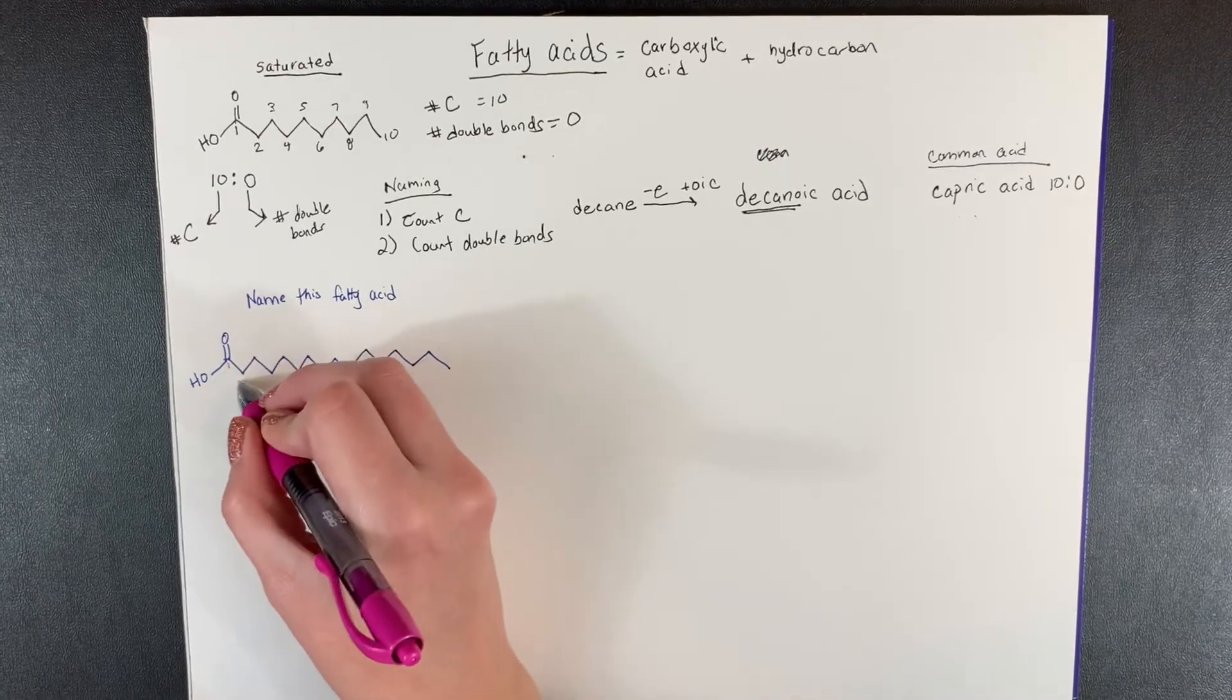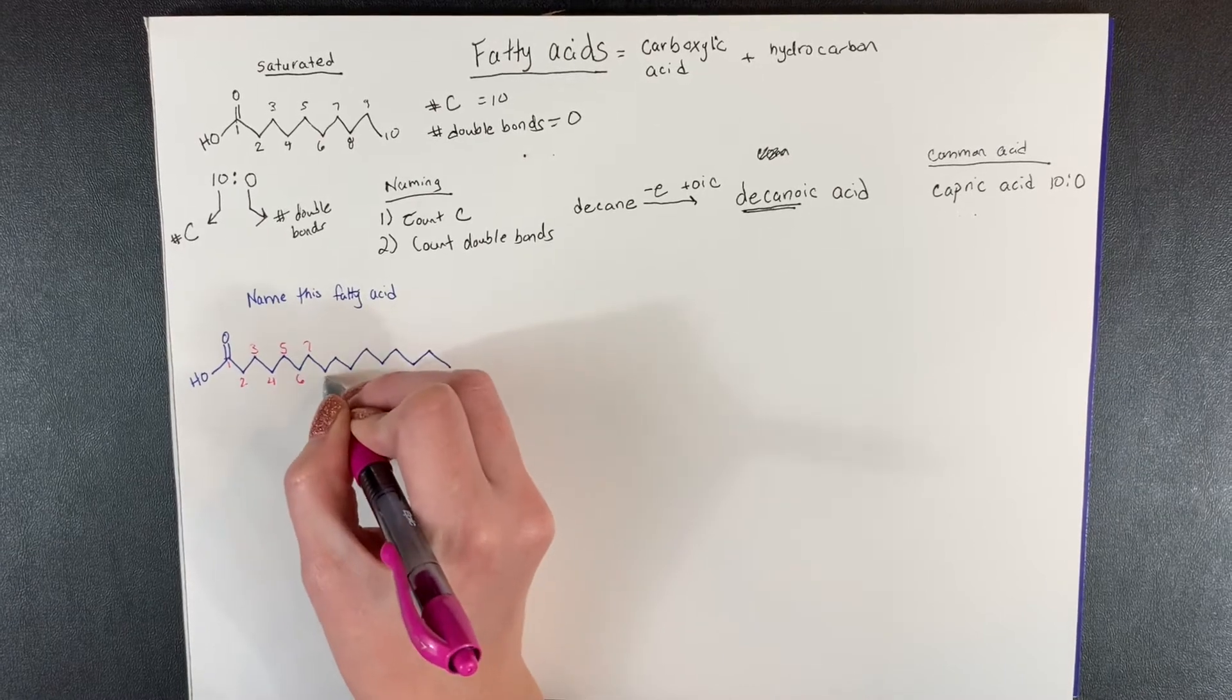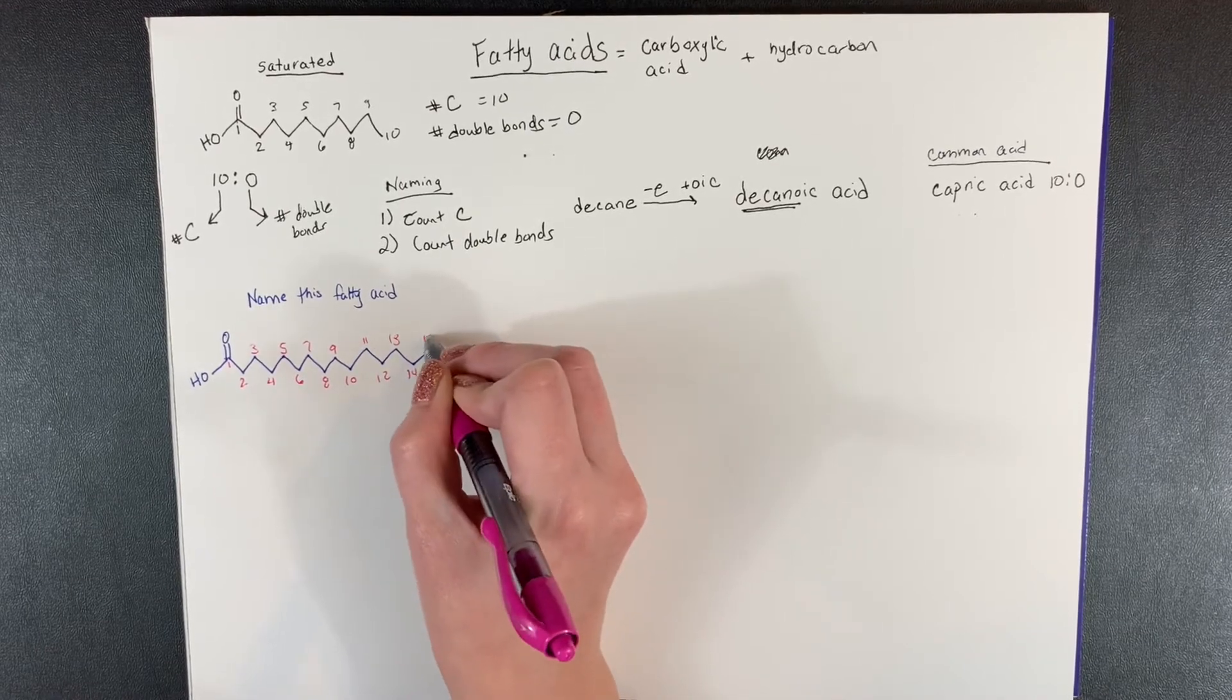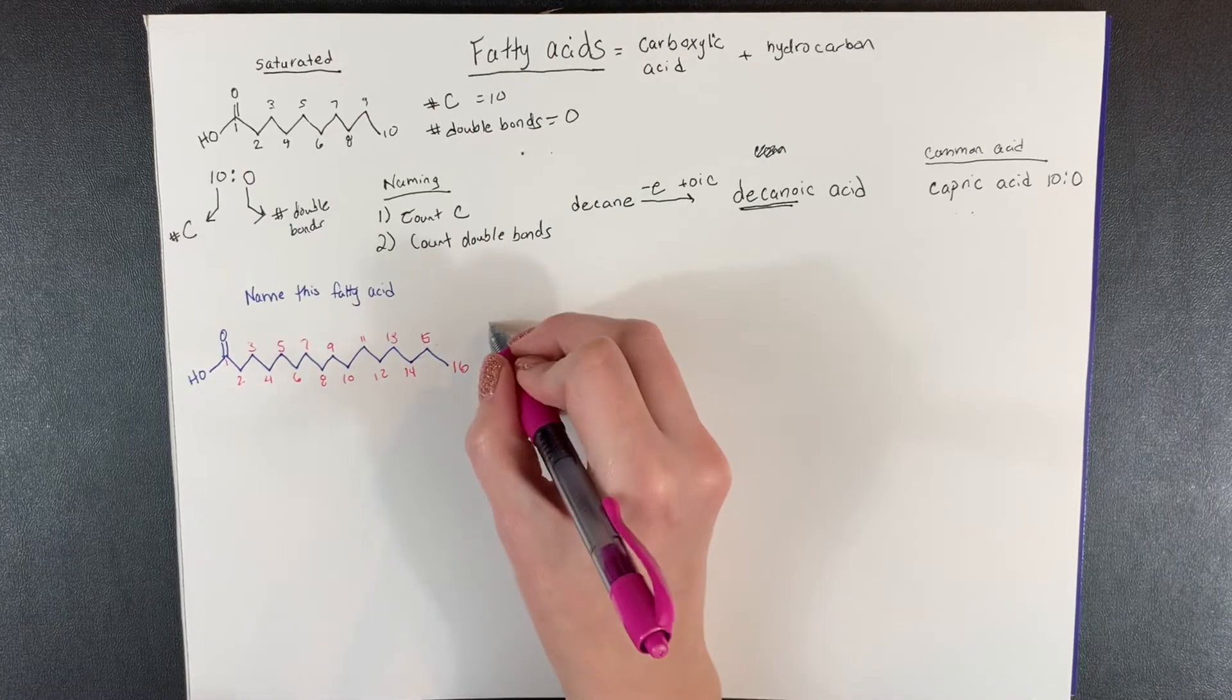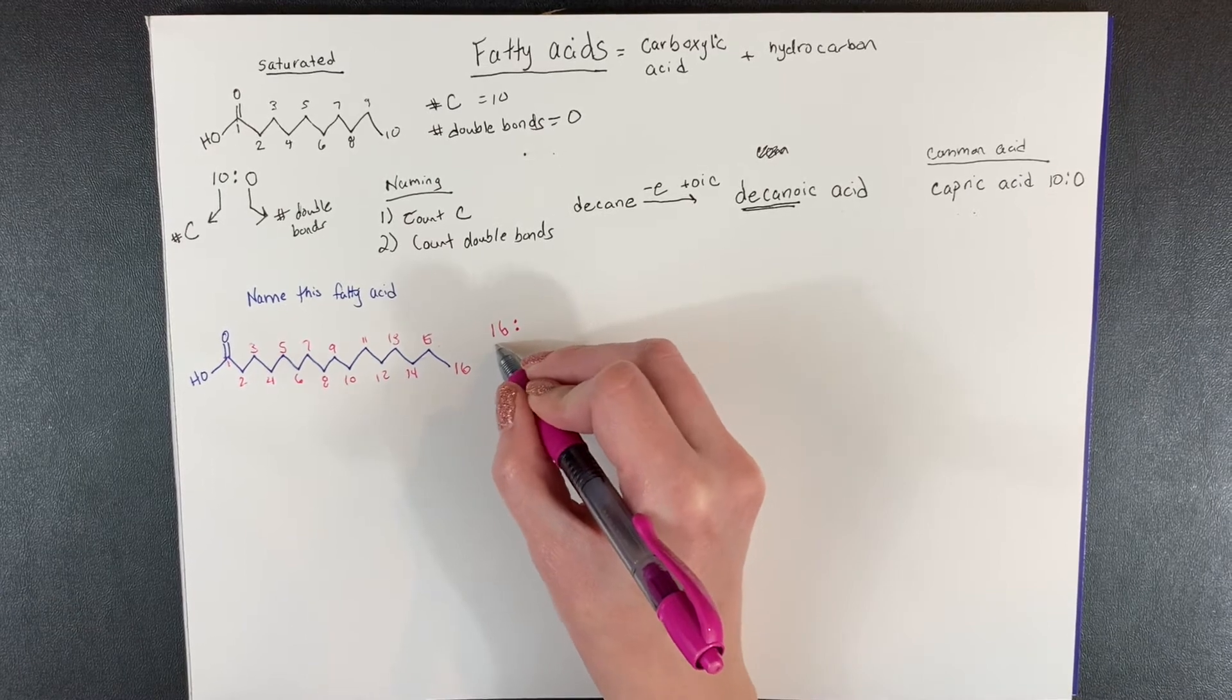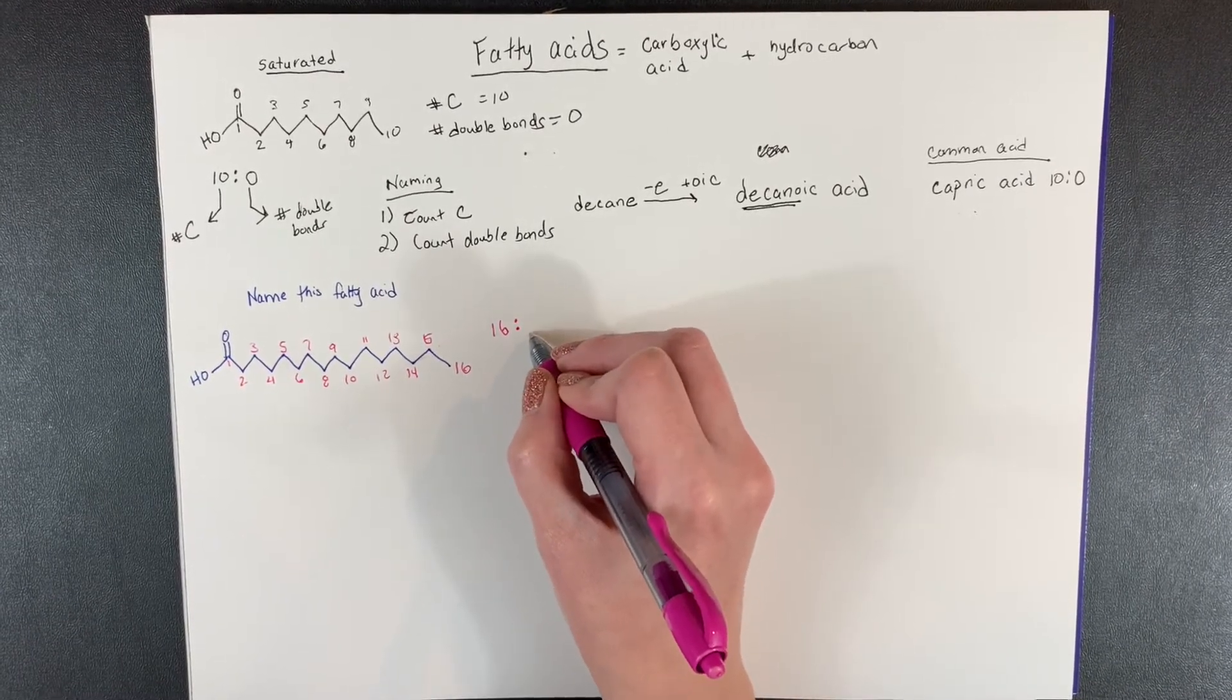So let's start numbering our carbons. I'll go one, two, three, four... All right, so I counted 16 carbons. So let me write that over here. Just for my reference, I'll put the two dots. So the first number, always the number of carbons. Now the second number will be the number of double bonds.